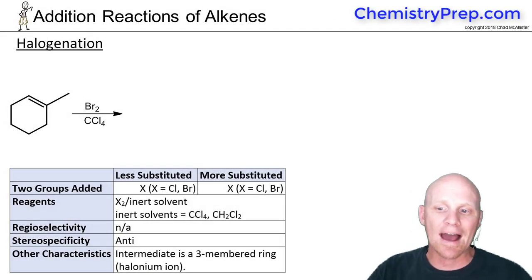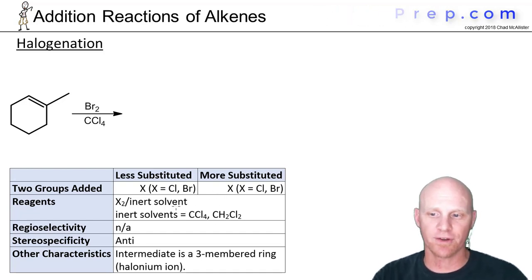So the next addition reaction we're going to look at here is called halogenation. Halogenation is going to involve either Br2 or Cl2 generally, and it's going to come with what we call an inert solvent.